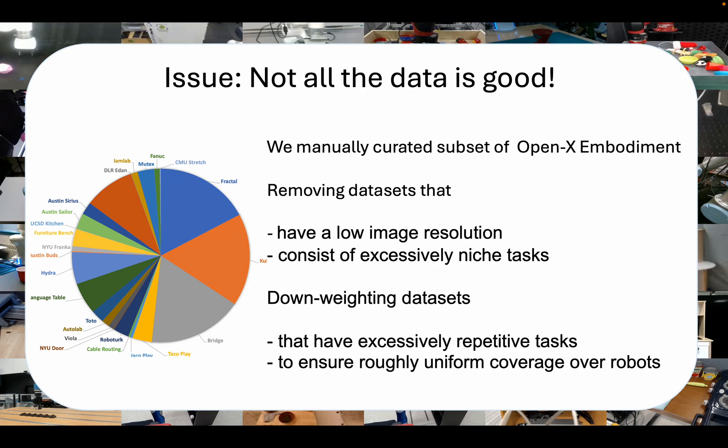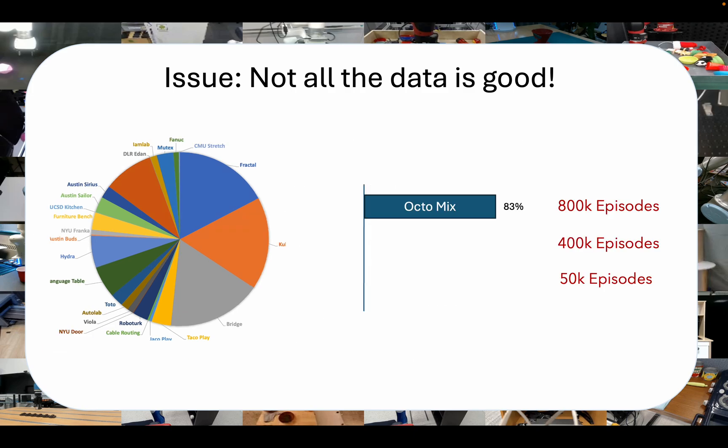The second issue is fundamental: not all the data in OpenX Embodiment is actually good. We had to carefully manually curate the data, removing and downweighting subsets that had bad image resolutions, niche tasks, or excessive repetition. This led to the Octo Mix, a collection of 800,000 episodes that outperforms prior dataset mixes and leads to positive transfer.